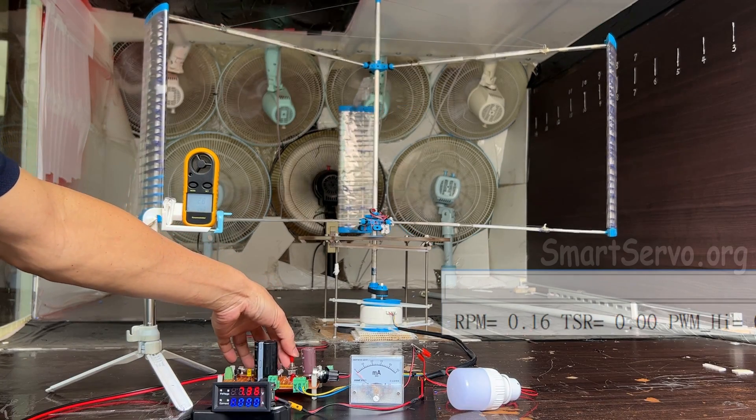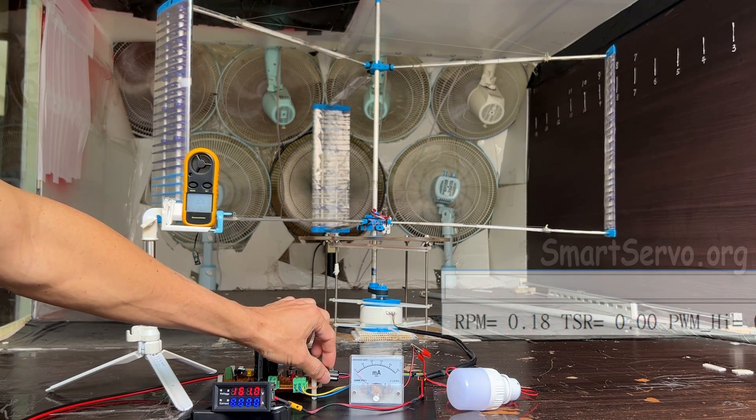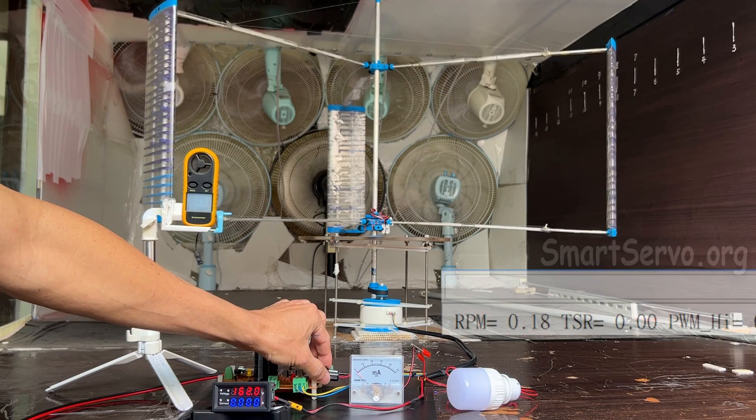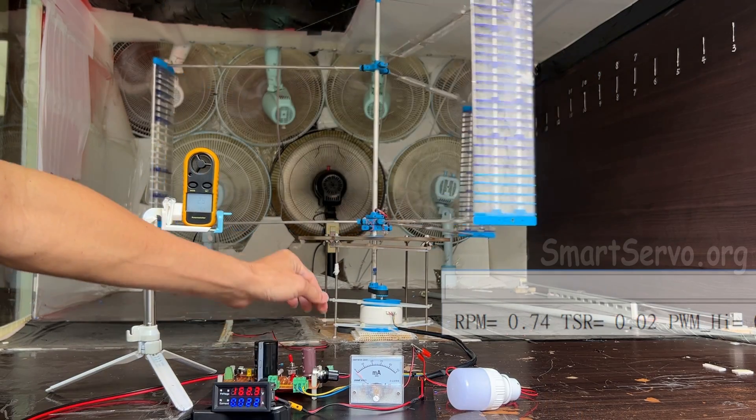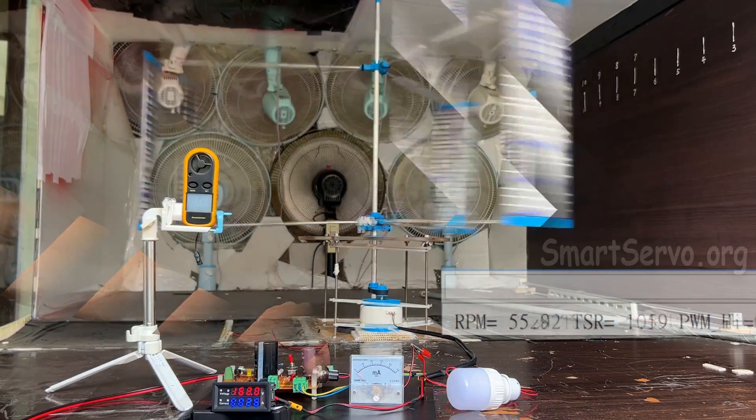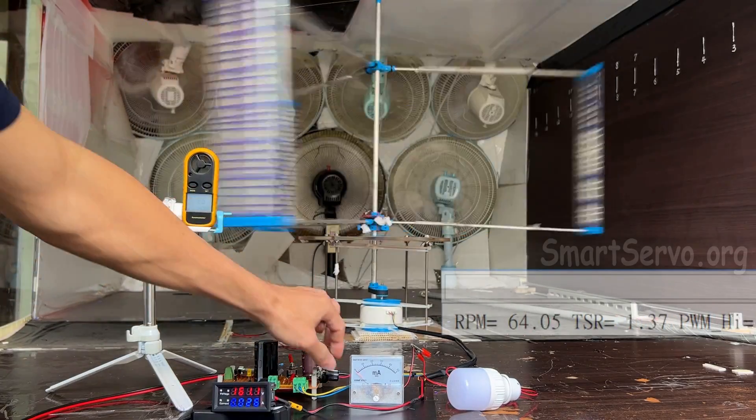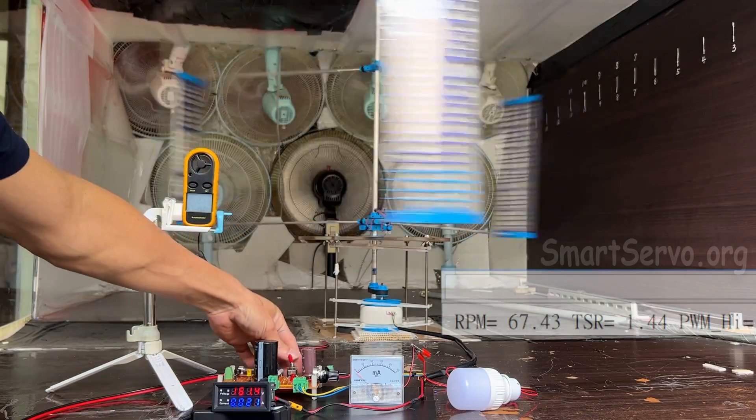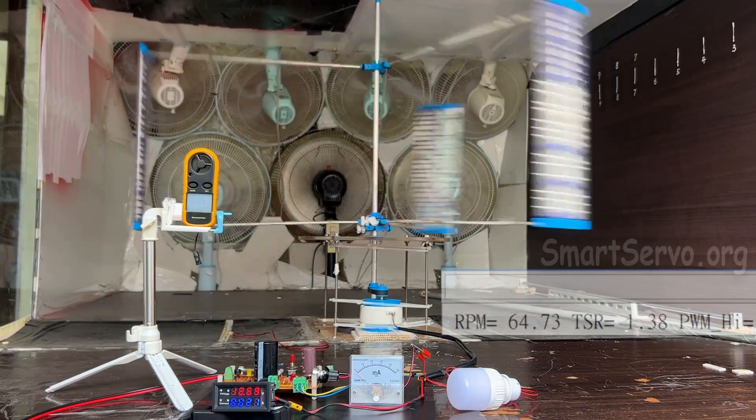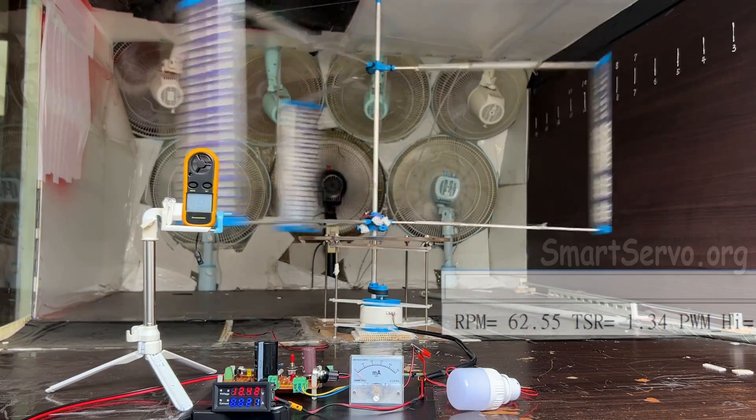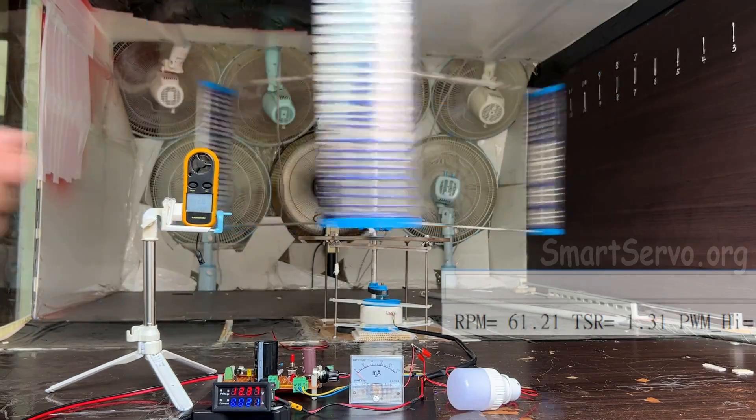Start the wind turbine again, this time increasing the wind speed to 2.5 meters per second. The wind turbine continues to accelerate. When it reaches 60 RPM, stop the motor. Will the wind turbine accelerate on its own? Negative. The wind turbine slows down, indicating that the starting speed is not enough.